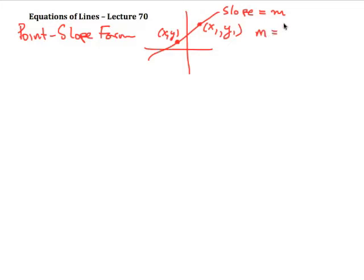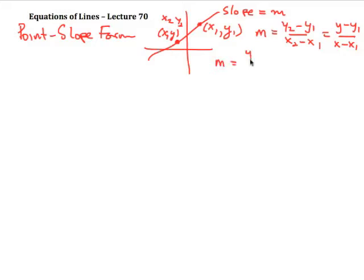Remember that we can work out the slope m as being y₂ minus y₁ over x₂ minus x₁. So let's take this general point as (x₂, y₂) and the known point as (x₁, y₁). In this case it's simply y minus y₁ over x minus x₁, where x and y are just the general point whose values we don't know. So we now have m equals y minus y₁ over x minus x₁.